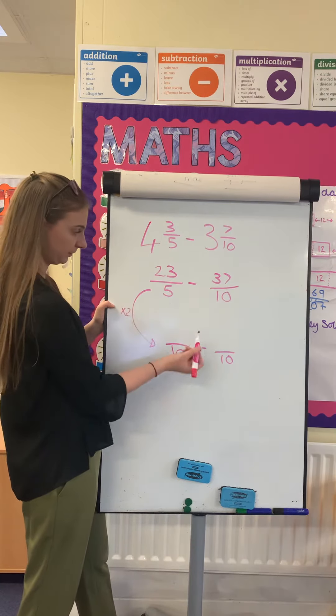Same principle — 46 take away 37 gives me 9, and 10 stays the same. So my answer for that question would be 9 over 10. Thank you.